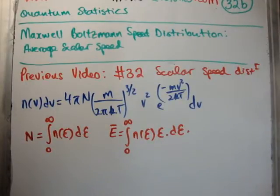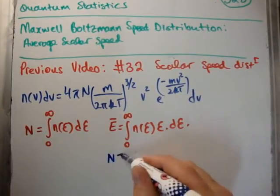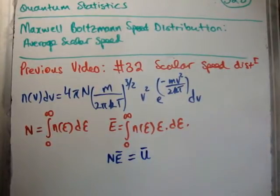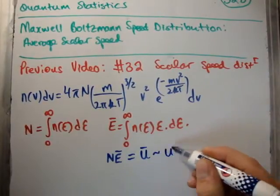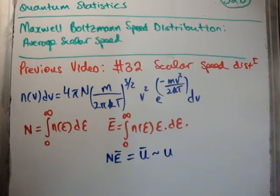So in order to get the total average energy of the system, what you would do is you would get the number of particles in a system, multiply it by the average energy of a single particle, and you get the average total energy of your system. Now, we're going to assume that fluctuations are very small in the system, so we say that this is approximately the total energy of your system. So, the point is this. If you have the average energy of a single particle, and you multiply it by the total number of particles, then we can say approximately that you have the total energy of your system.